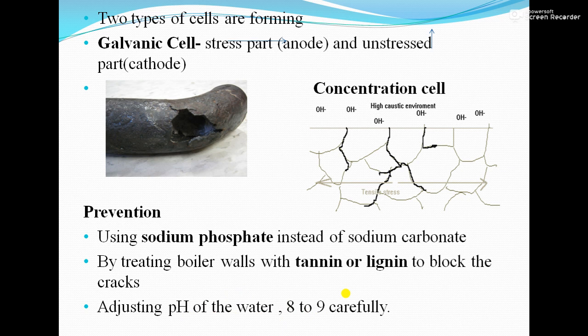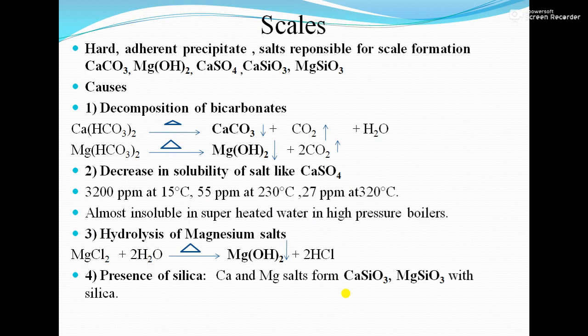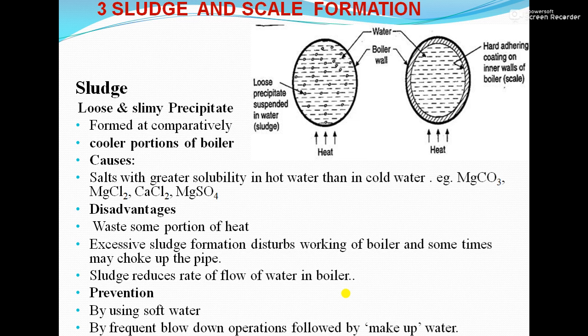That concludes the discussion on caustic embrittlement — its causes, disadvantages, and prevention — as well as scale and sludge, their causes, disadvantages, and prevention. Thank you.